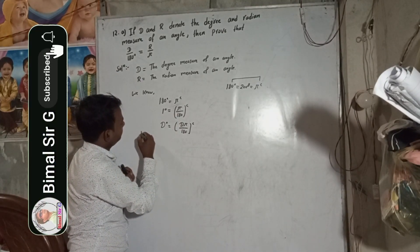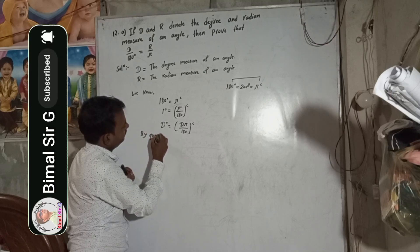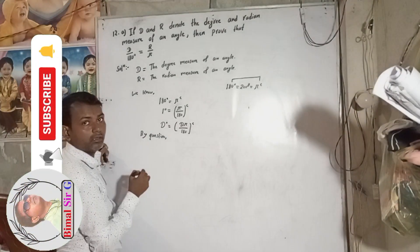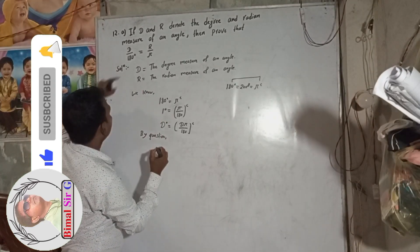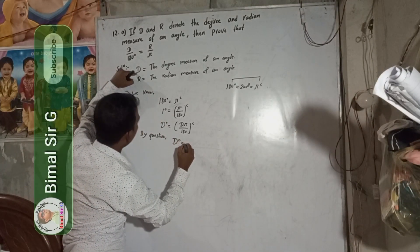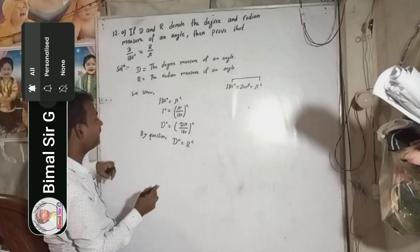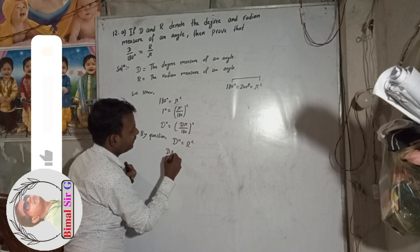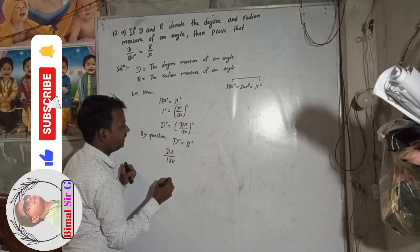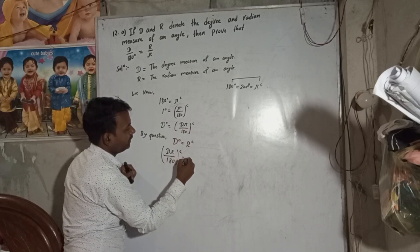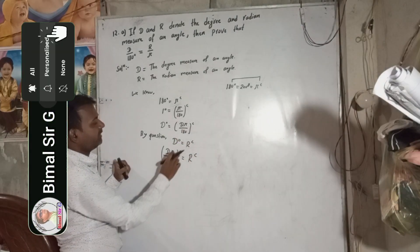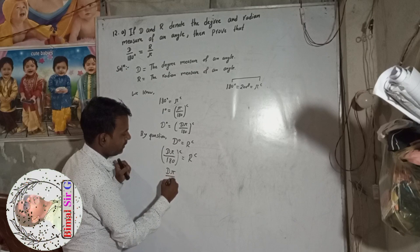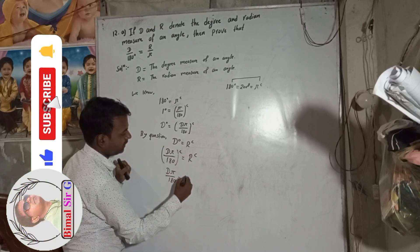Now, by the question, D degree is equal to R radian. That means D degree means this is D pi by 180. So we can put D pi by 180 radian equal to R radian. It means D pi by 180 is equal to R.